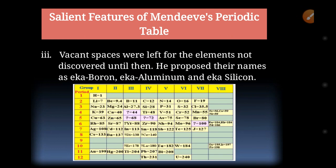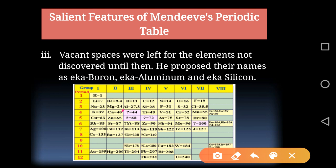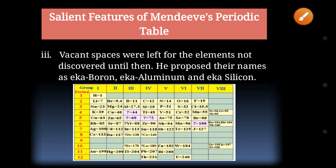The third point is that vacant spaces were left for elements not yet discovered. Vacant means empty. In his periodic table, Mendeleev left some empty spaces and even named them: Eka-Boron, Eka-Aluminium, and Eka-Silicon. 'Eka' means first. These spaces were reserved so that newly discovered elements could be placed in them.